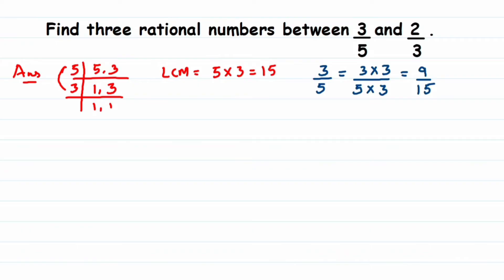Similarly, I change 2/3 to an equivalent form. For 2/3, what should I multiply by 3 to get 15? It's 5. So multiply numerator and denominator by 5: 2 × 5 = 10, and 3 × 5 = 15. So 2/3 becomes 10/15.